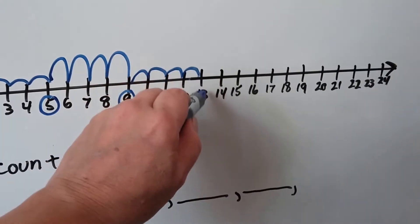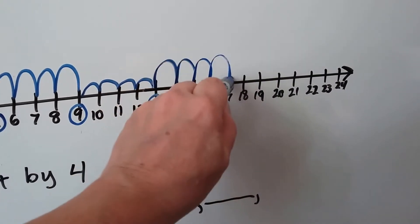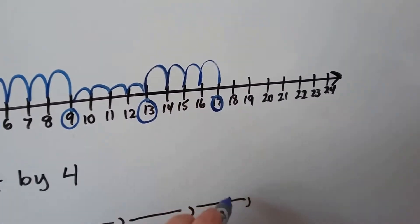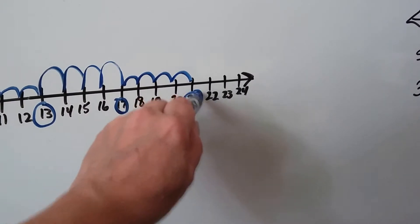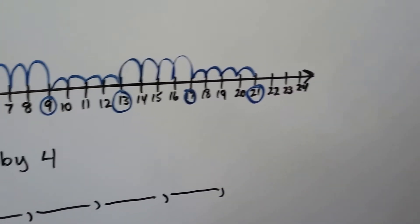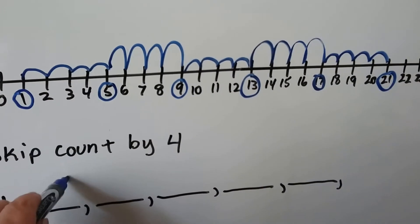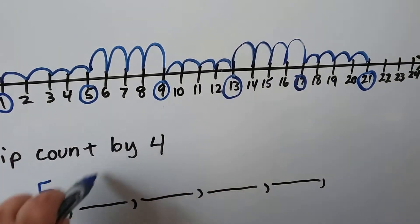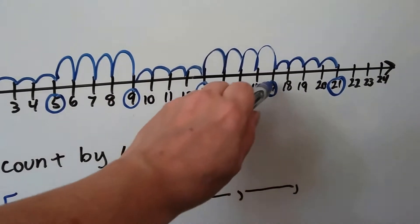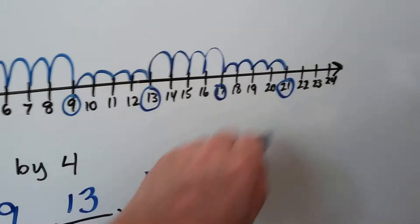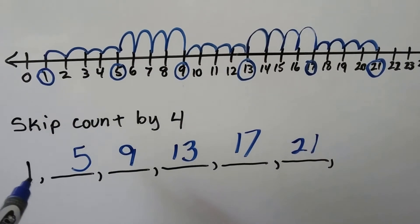One, two, three, four — that's a thirteen. One, two, three, four — that's a seventeen. And if the number line kept going, we could keep going, couldn't we? So the numbers we have are: one, five, nine, thirteen, seventeen, and twenty-one. We skip counted by four starting with a one.